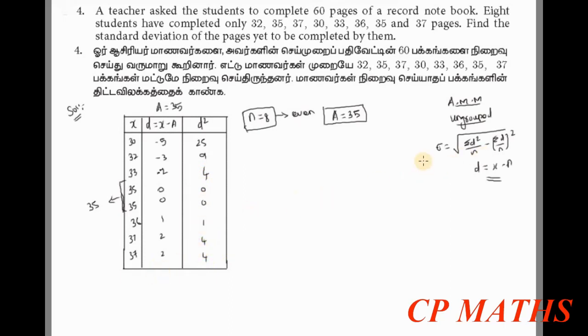Summation means adding up the values. For summation of d, add all the d values: minus 5 and plus 5 cancel out. Adding the remaining values: 4 plus 4 is 8, 8 plus 9 is 17, minus 5 is 12, plus 9 is 21, actually let me recalculate - this gives minus 5. For summation of d square, add all values: 0 plus 1 is 1, plus 4 is 5, plus 4 is 9, 9 plus 4 is 13, 13 plus 9 is 22, 22 plus 25 is 47.